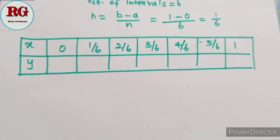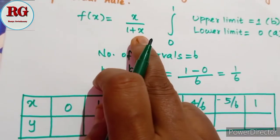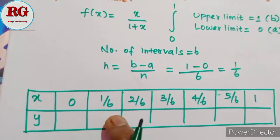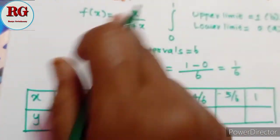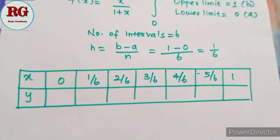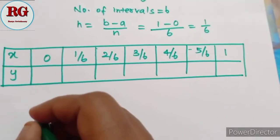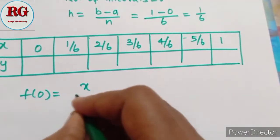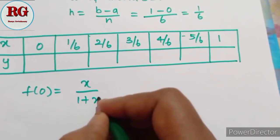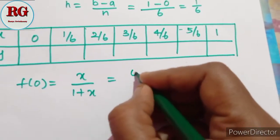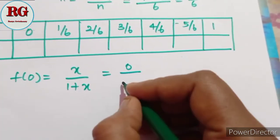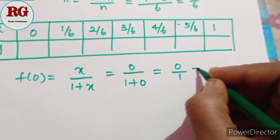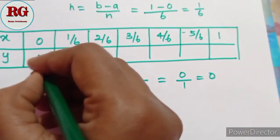Now we substitute each x value into the function. First, f(0): substituting 0 into x divided by (1 plus x) gives 0 divided by (1 plus 0). The first value is 0.